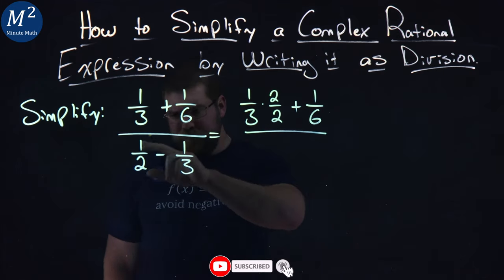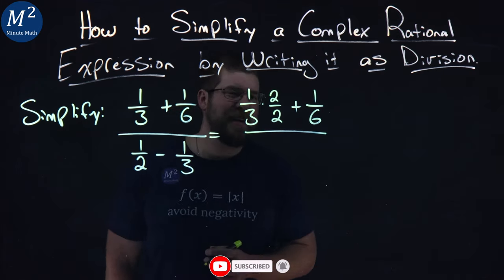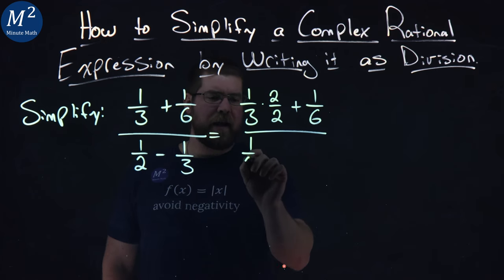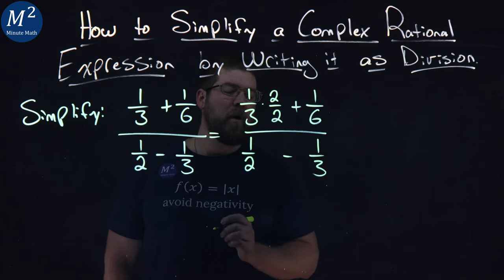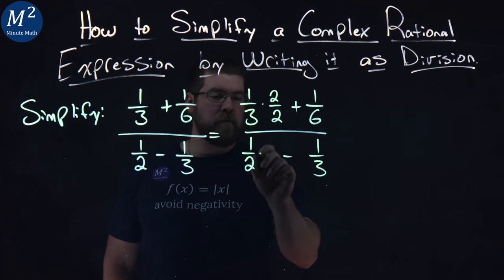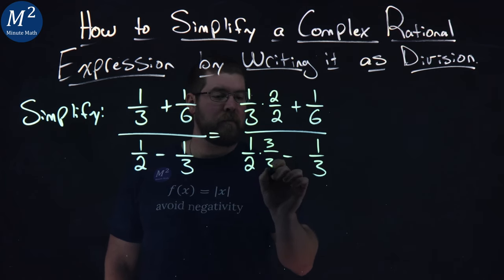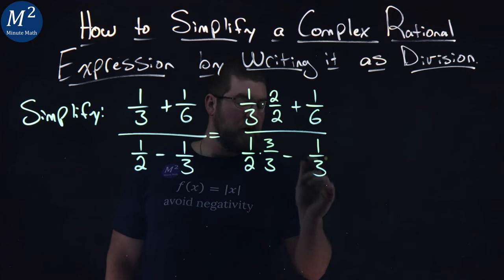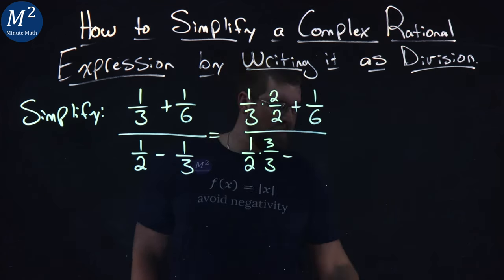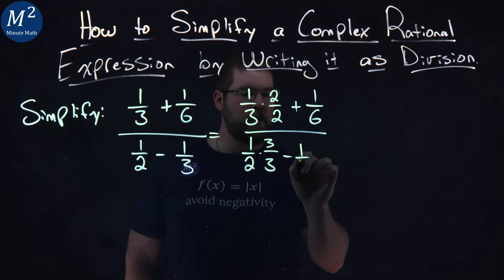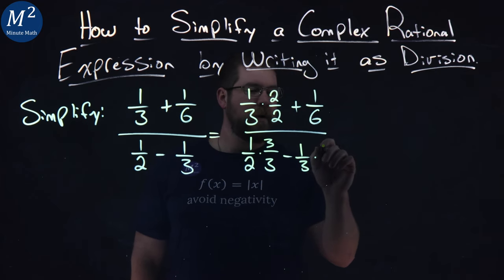The denominator here, the big one, we have 1/2 minus 1/3. So I have 1/2 here minus 1/3. What I'm going to do is multiply the first fraction, 1/2, by 3/3, and I can put it over here, keep it consistent. The second, 1/3, I'll multiply by 2/2.